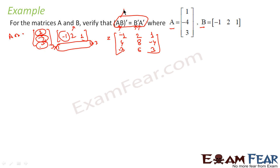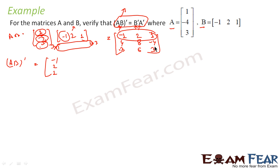Now we have to find (AB)'. To find the transpose of AB, we convert rows to columns. So AB transpose — writing it out — becomes: first row [-1, 4, -3], second row [2, -8, 6], third row [1, -4, 3]. This is my LHS.